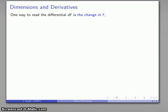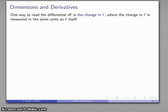One way to read this differential notation df is that it's the change in whatever our function is. The important observation here, as far as the dimensions are concerned, is that the change in a function is measured in the same units as the function itself. So if I'm measuring a change in distance, the change is in the same units as distance. If I'm measuring change in mass, the units will be the same as the units of mass, and so on.